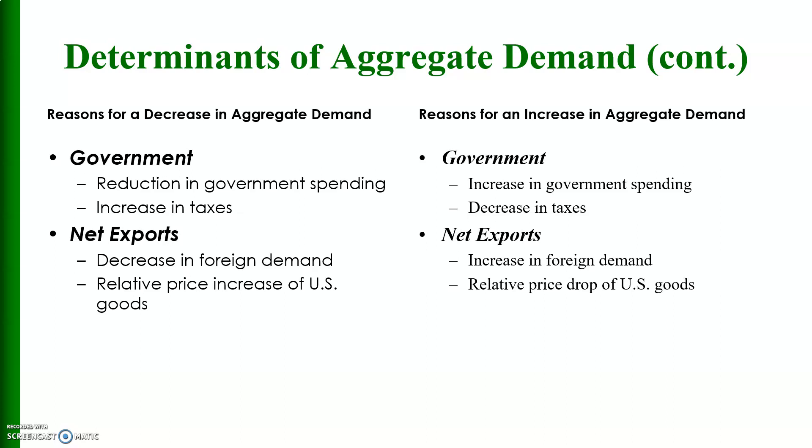There are also other reasons for a decrease in aggregate demand regarding government expenditure: reduction in government spending and increases in taxes. Regarding net exports: decreases in foreign demand and a relative price increase of US goods. Reasons for an increase in aggregate demand include: increase in government spending, decrease in taxes, increase in foreign demand, and a relative price drop of US goods.